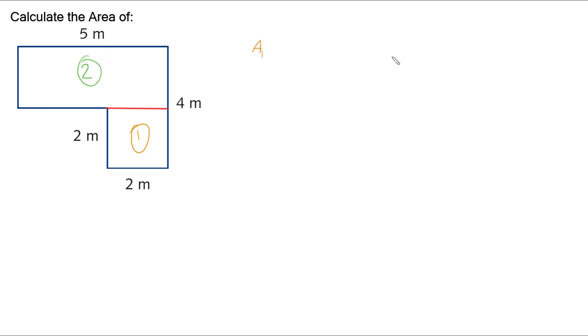Area 1, now that's this square that is 2 by 2. The area of a square is side squared, so we're going to do 2 squared. And so our first area is 4 meters squared.